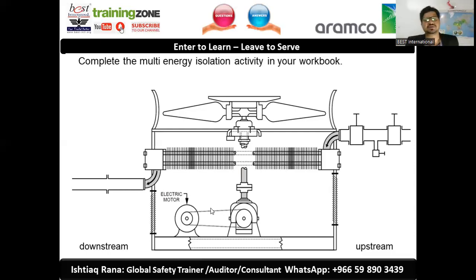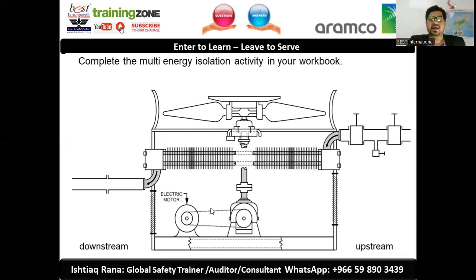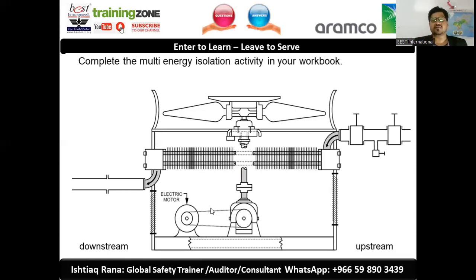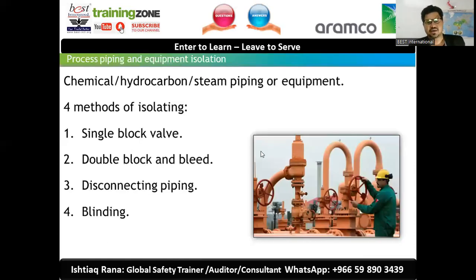For confined space entry, only two methods are acceptable: blinding and disconnection. Single block valve and double block and bleed are NOT acceptable for confined space isolation. We will discuss these in detail.